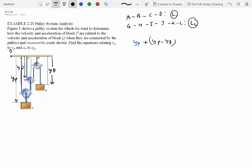So what we got is YP plus YP minus YD. YP minus YD indicates the length of segment CD. And that is equal to constant. So we get 2YP minus YD equal to constant.